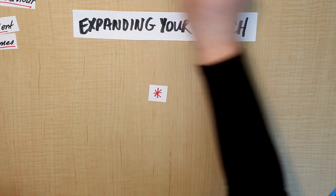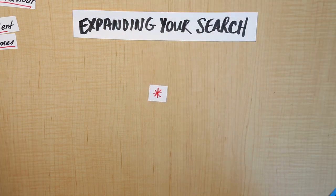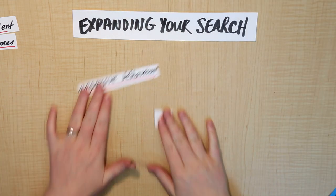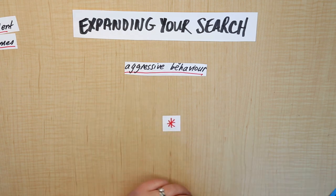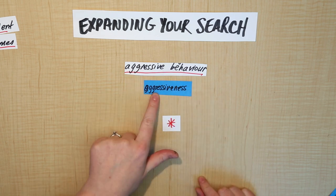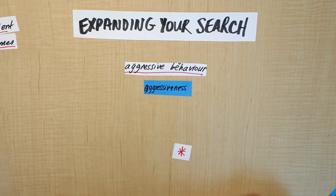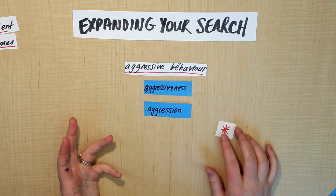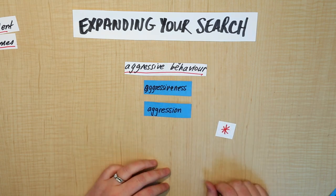For example, let's say one author used the term aggressive behavior when describing their research, another author used aggressiveness, and a third used aggression. These all mean the same thing and the words all have the same root.